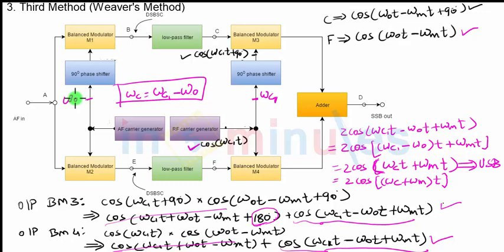But in the process of overcoming these two drawbacks, you can see that we have complicated the entire block diagram. There are four balance modulators being used. And please remember that these balance modulators will be nothing but those diode balance modulators or ring modulator circuits that we have discussed. There are four balance modulators, and there are two carrier generators that we require. So this whole block diagram is much more complicated than the previous two methods.